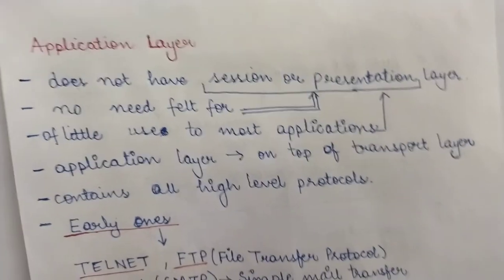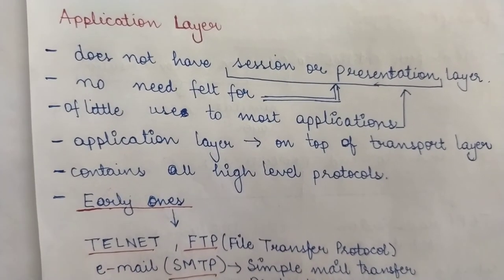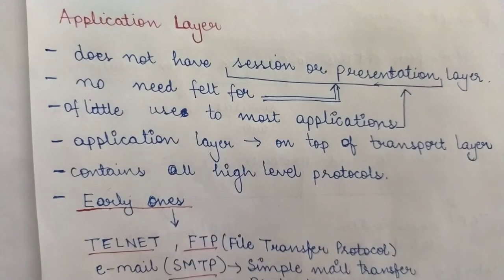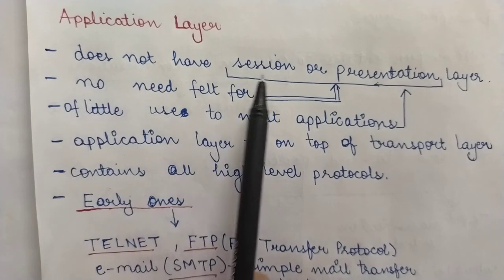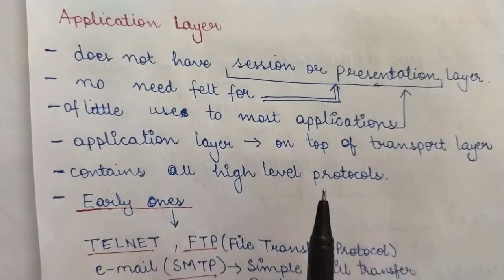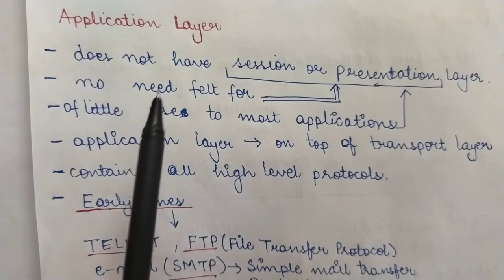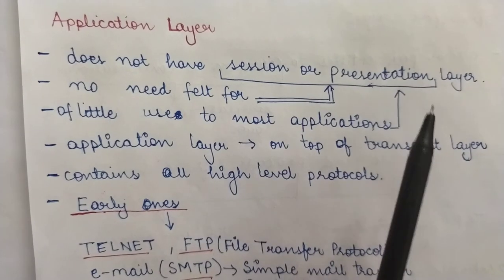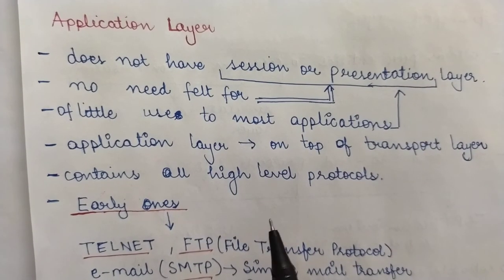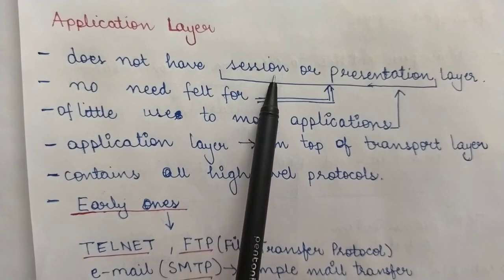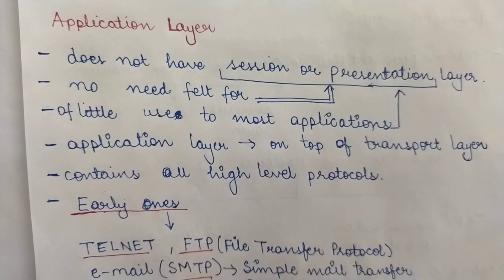The fourth and final layer of the TCP/IP reference model is the application layer. The TCP/IP model directly has the application layer after the transport layer — there is no session or presentation layer in between. No need was felt for a session or presentation layer when this model was being designed, and later experience with the OSI reference model proved that these layers are not really that important and were found to be of very little use.